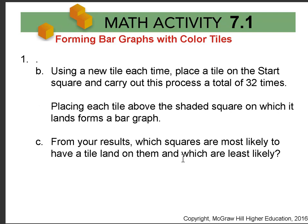Then in part B we say using a new tile each time, actually go through. Put the tile, do the spinner, get to the top, leave the tile, and go on. And then from your results, which squares are more likely to have a tile land on them? And does that match your prediction?